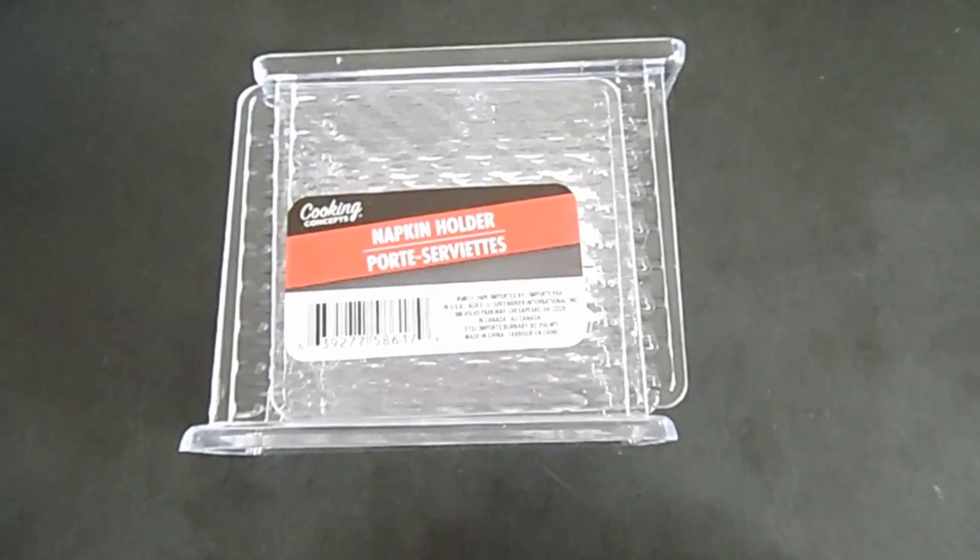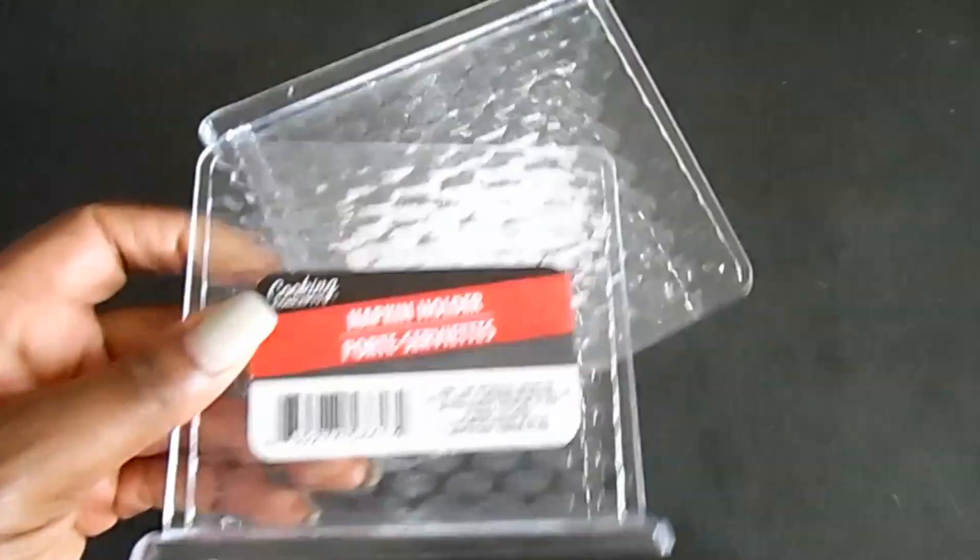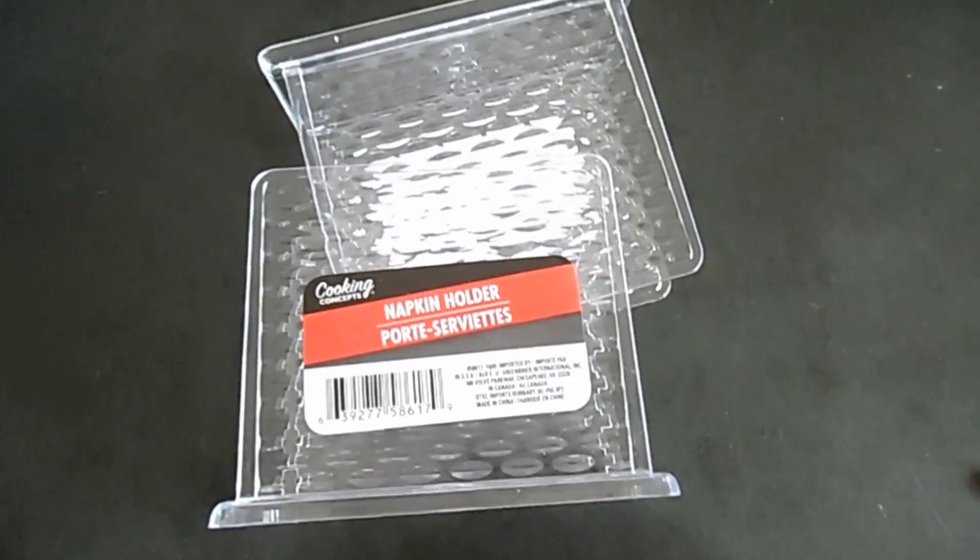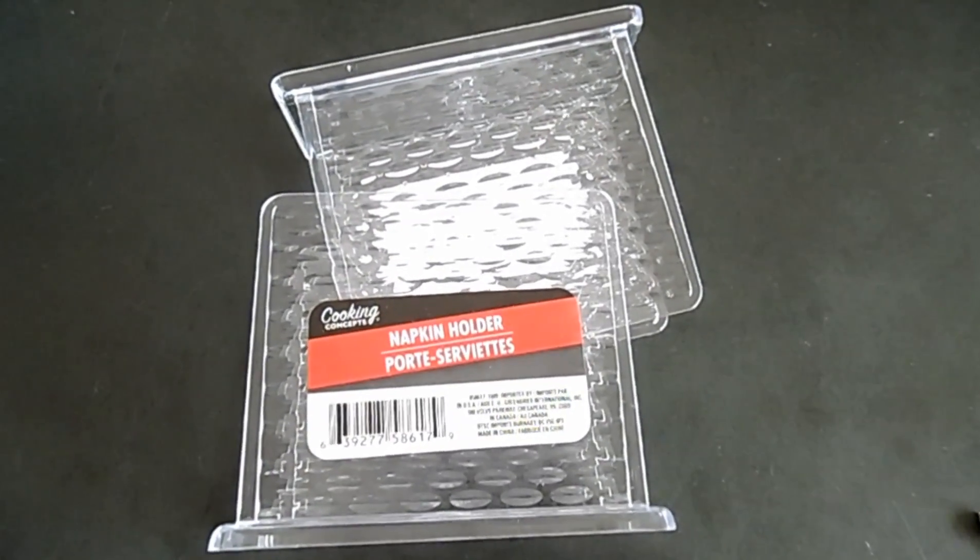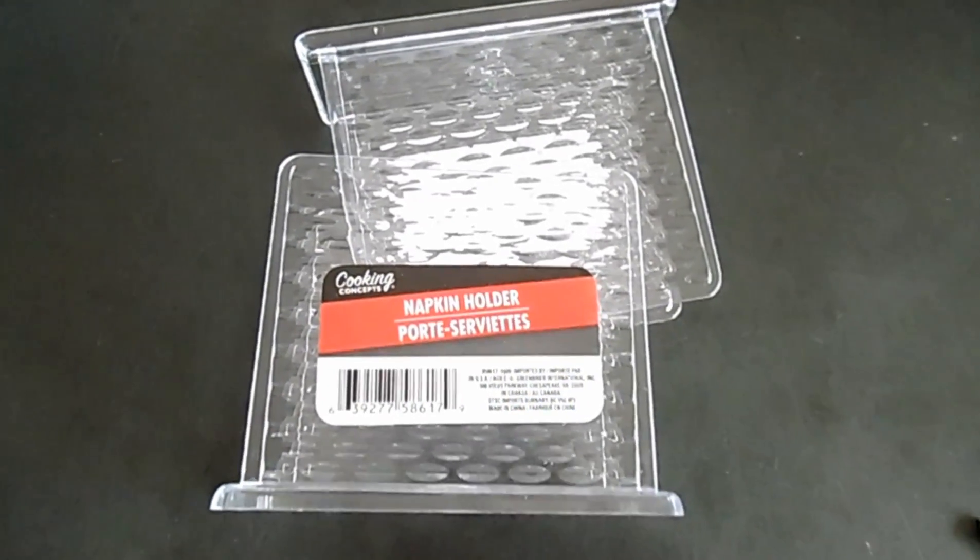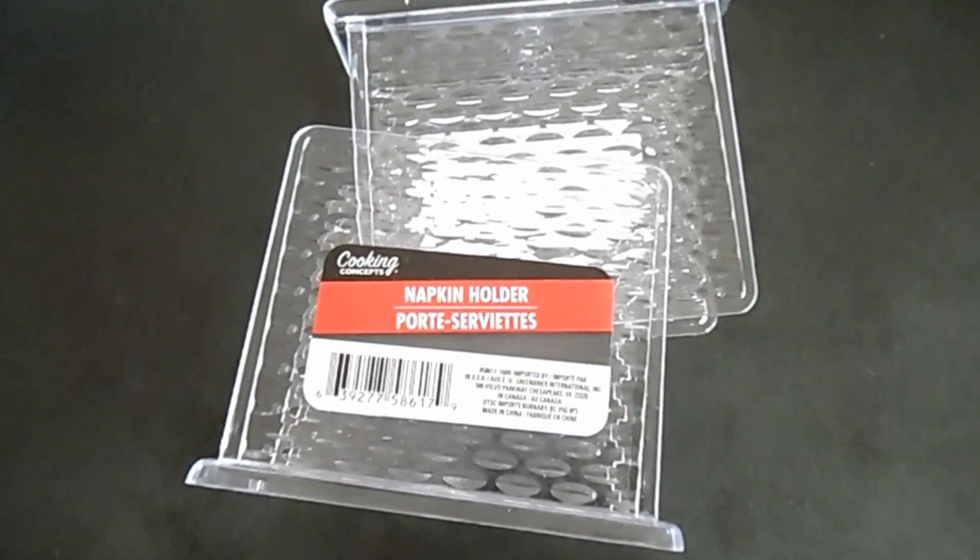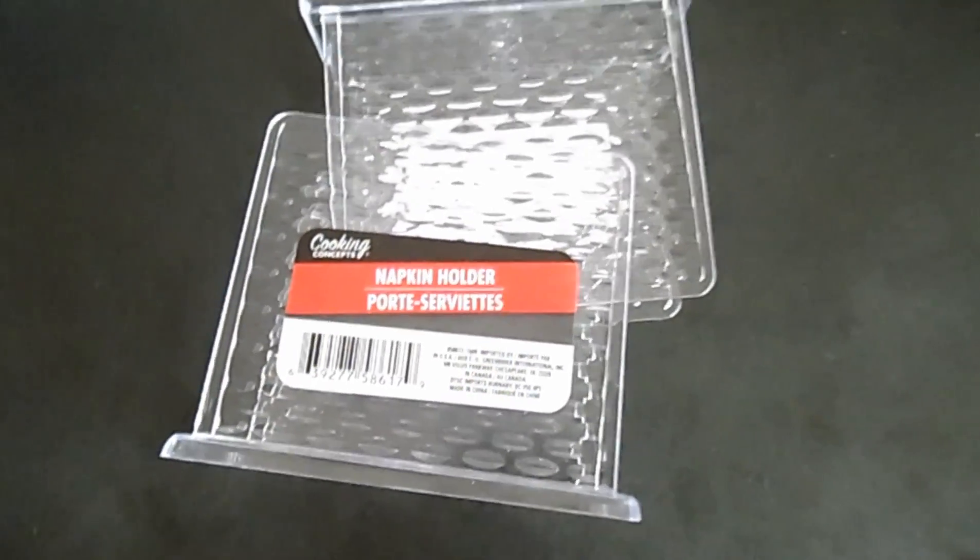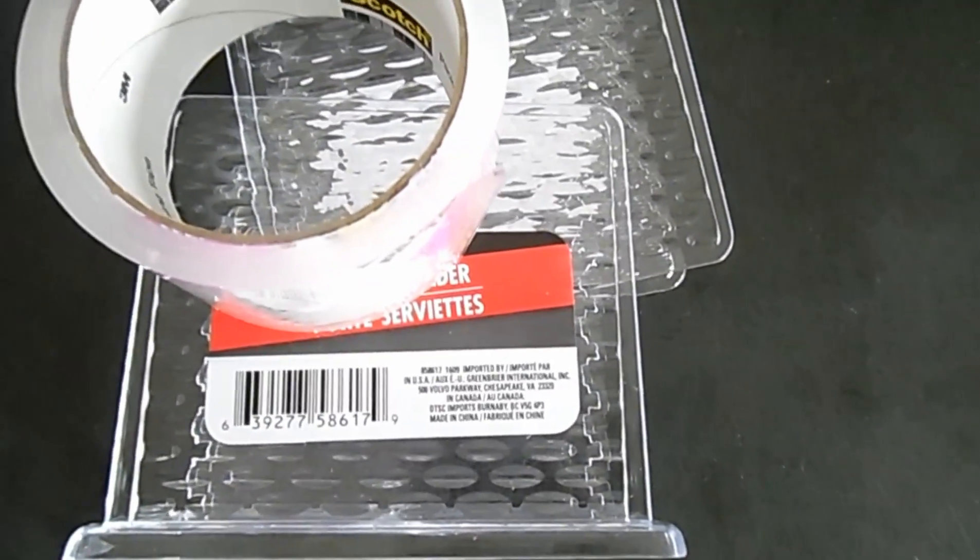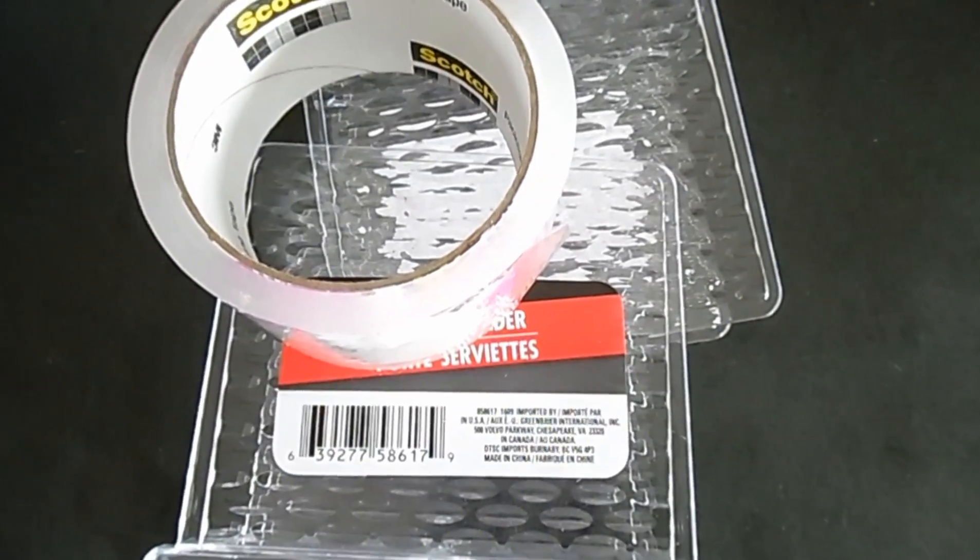For this next project you'll need at least six of these napkin holders from the Dollar Tree and this is going to have the same kind of a base as the lipstick holder that I shared before. I will link that in the description box and in an iCard. And you will be needing tape and your glue gun and that's it. And if you'd like to fancy it up a little bit a little bit of bling trim will be good as well.